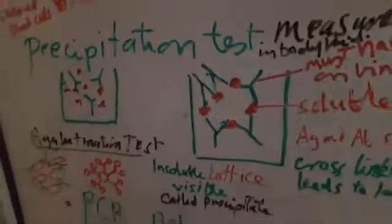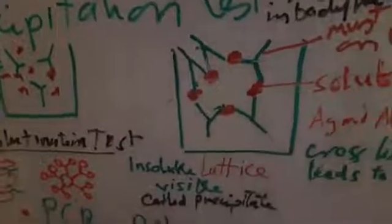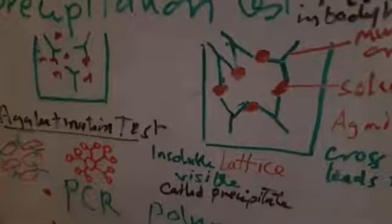Lattice formation means insoluble resulted from soluble when they are free. If you are interested to separate some specific antibodies, you can change them to insoluble form. This technique is known as precipitation test.